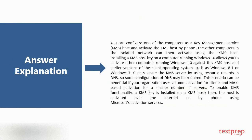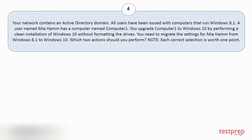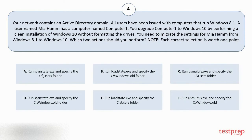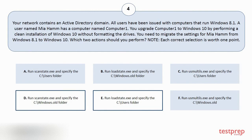Question number four. Your network contains an Active Directory domain. All users have been issued with computers that run Windows 8.1. A user named Miaham has a computer named Computer One. You upgrade Computer One to Windows 10 by performing a clean installation of Windows 10 without formatting the drives. You need to migrate the settings for Miaham from Windows 8.1 to Windows 10. Which two actions should you perform? Note: each correct selection is worth one point. The correct answers are option D and E.